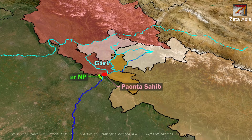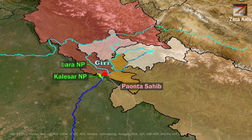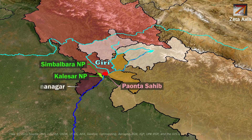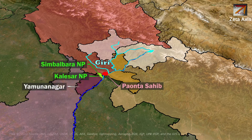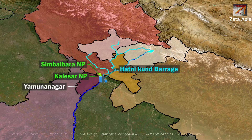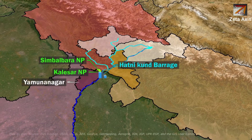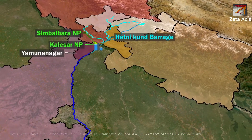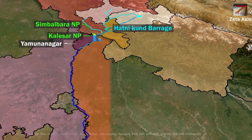Here we see Kalesar National Park and Simbalbara National Park. After passing through the Siwaliks, the Yamuna river emerges in Yamunanagar district of Haryana, where Hathikund Barrage is built. West Yamuna Canal starts from this barrage. At the Hathikund Barrage, the waters are diverted into two large canals: the Western Yamuna Canal flowing towards Haryana and the Eastern Yamuna Canal flowing towards Uttar Pradesh.